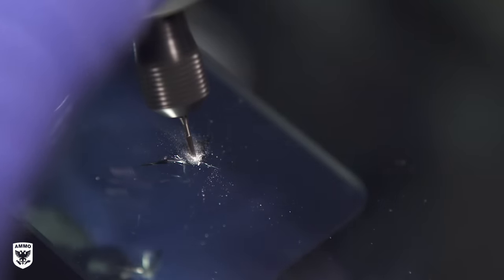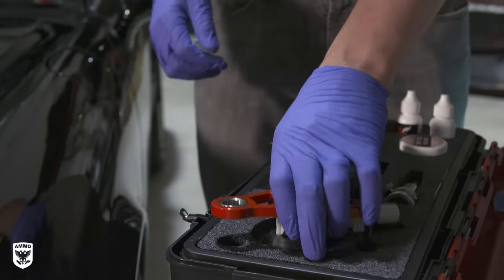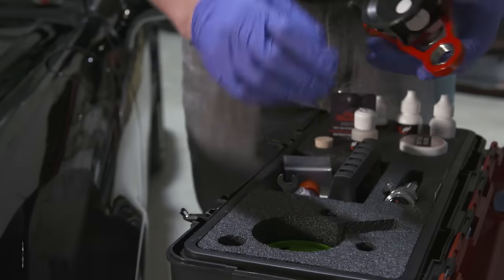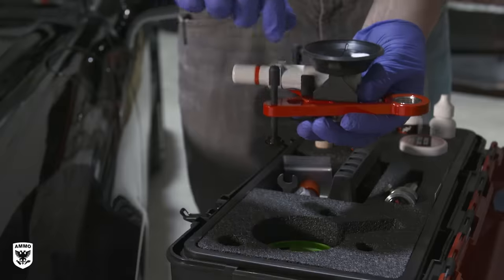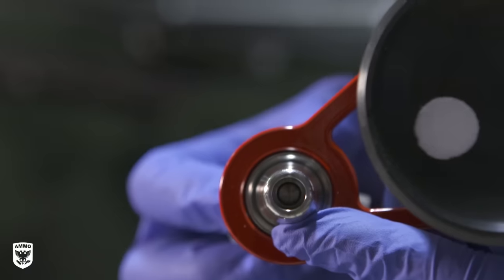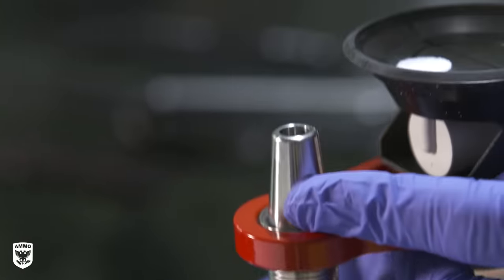Now that we have easy access to the air pocket, Josh prepares a tool called a bridge. This holds the resin injector that creates the vacuum seal on the air pocket, which allows the resin to fill the void while the air is permanently removed.